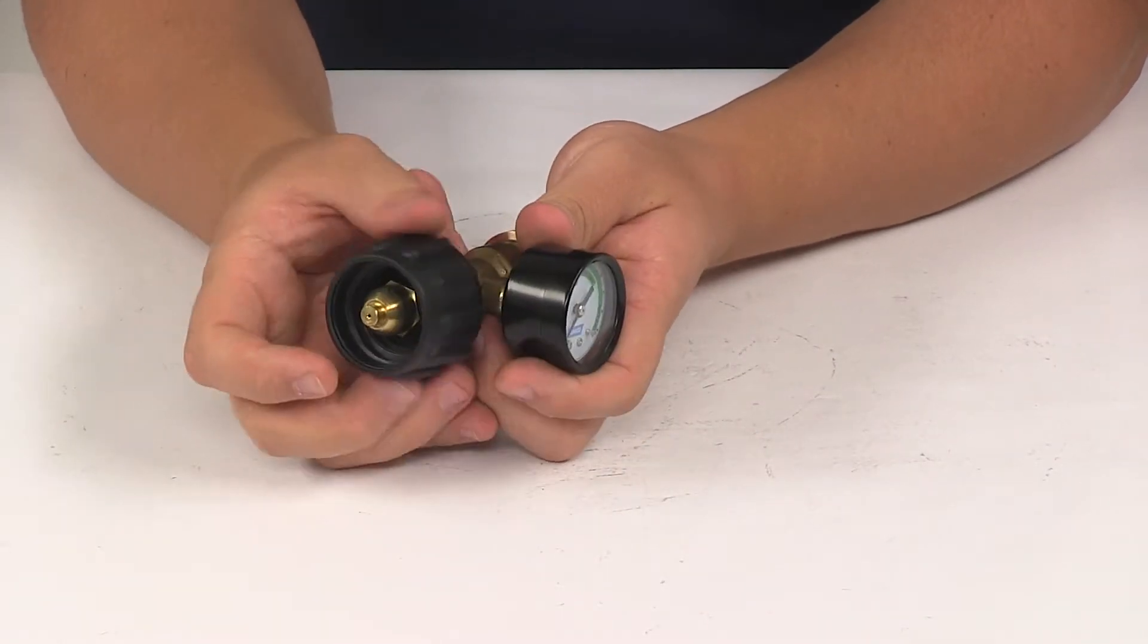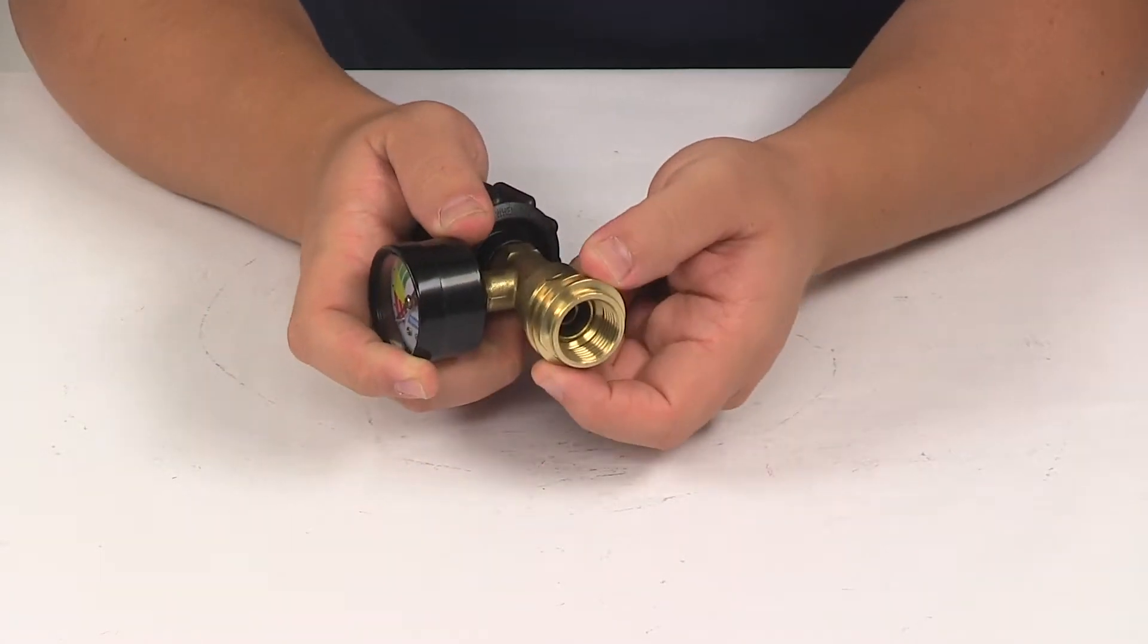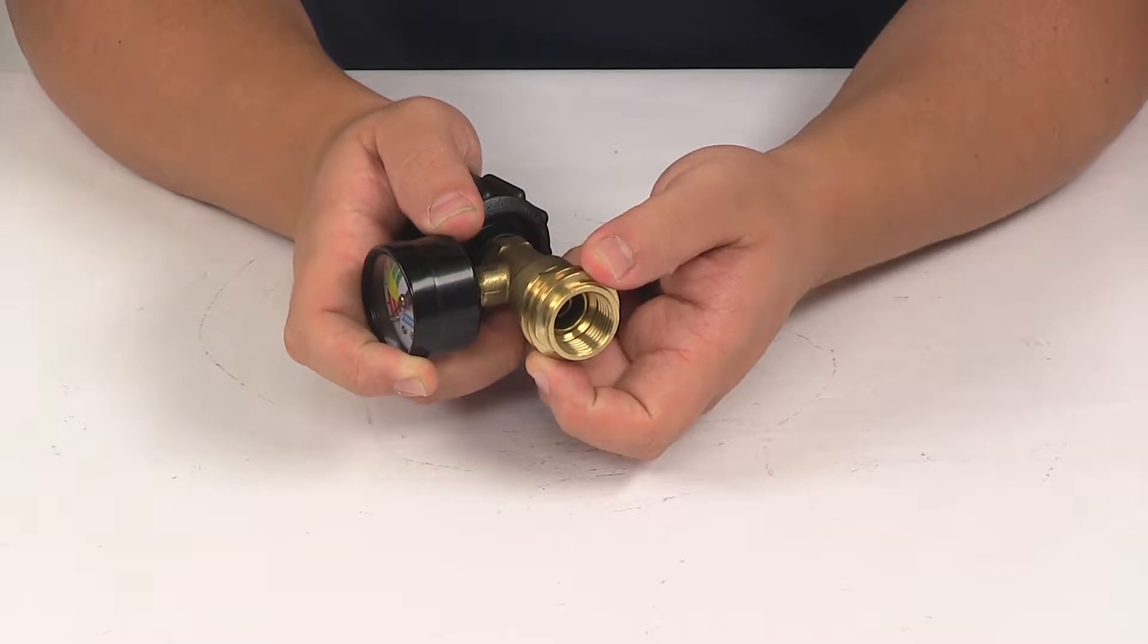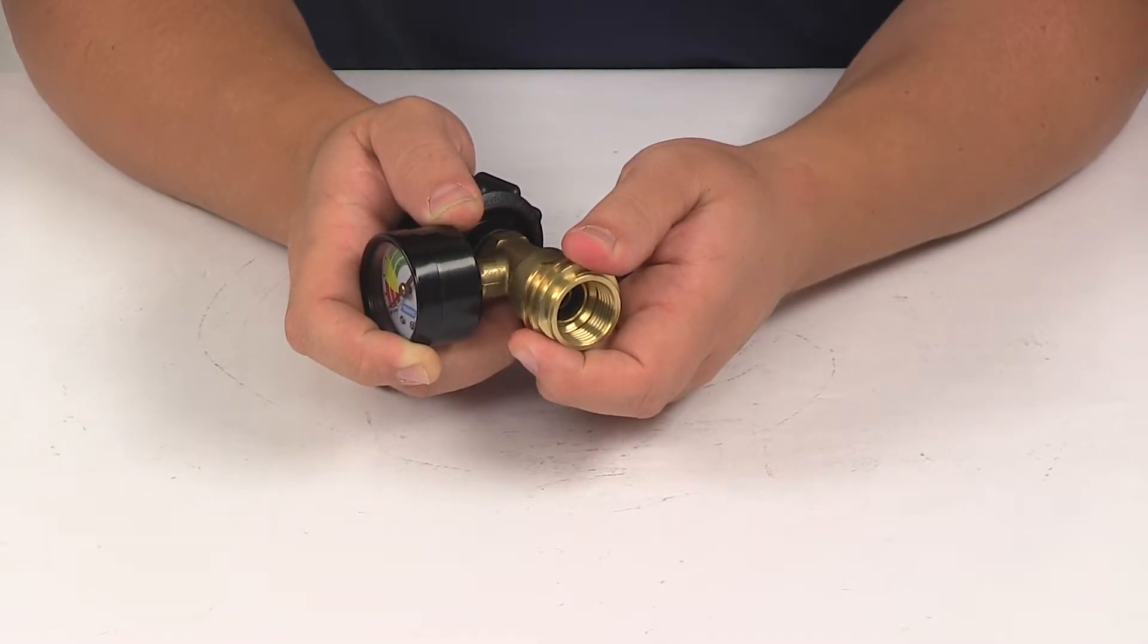When it comes to the connections, on this side you're going to have the acme nut on one end. This connects to your propane tank. You're going to have your acme thread and female POL on the other end that connects to an acme nut or male POL connector on your regulator.